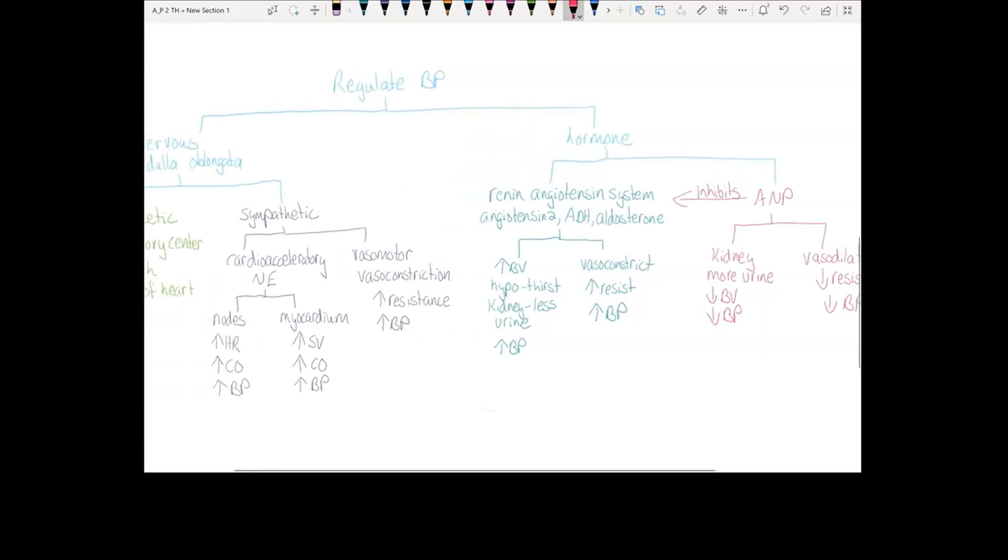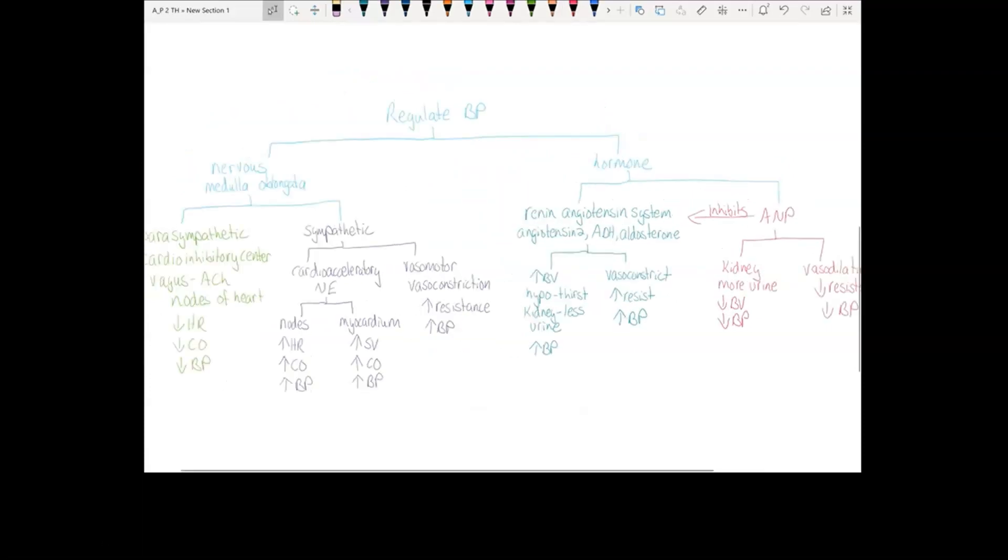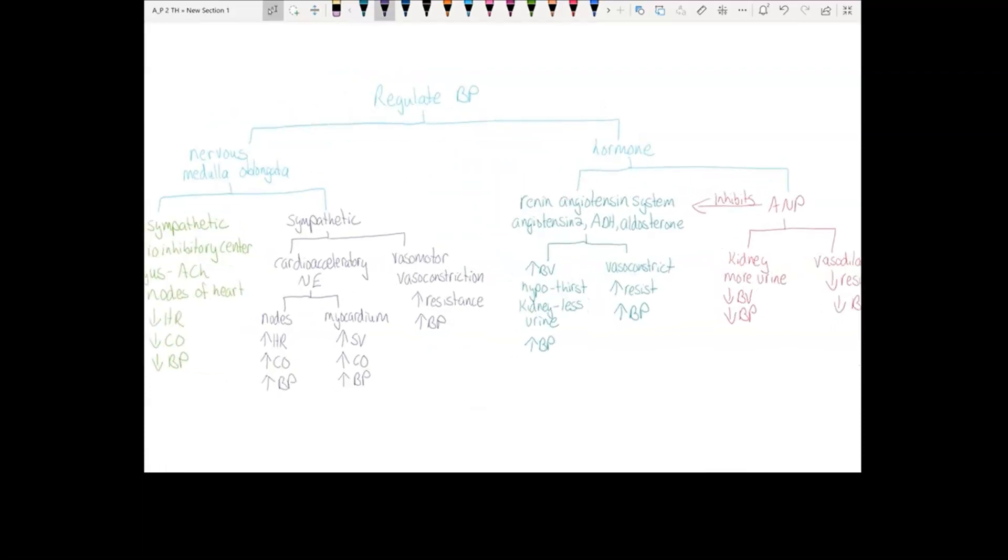You have a connection between nervous and hormone. Because the sympathetic system can send norepinephrine to stimulate the kidney to secrete renin and get the renin-angiotensin system started. So the renin-angiotensin system can be its own thing if the kidney is responding to a decrease in blood pressure. It can also be stimulated by sympathetic and inhibited by ANP.